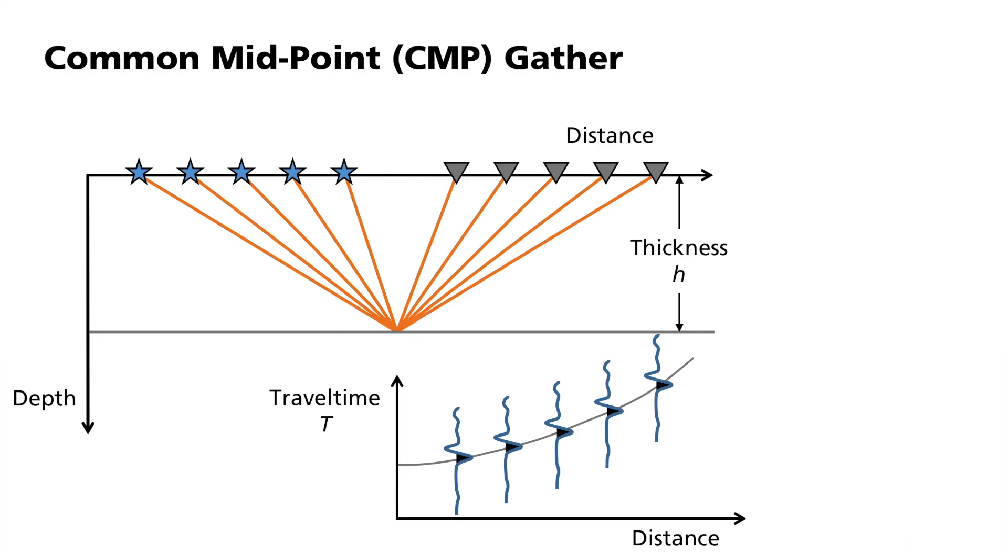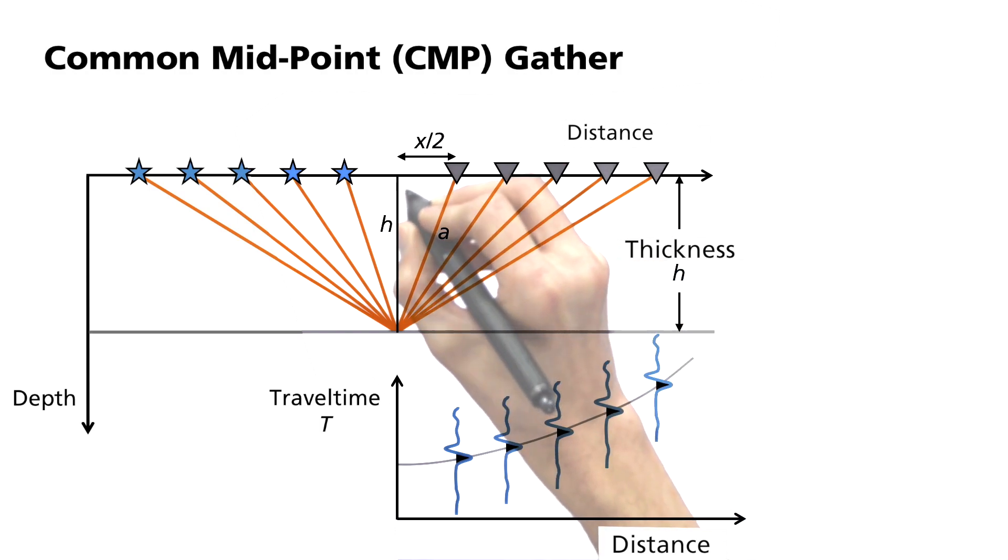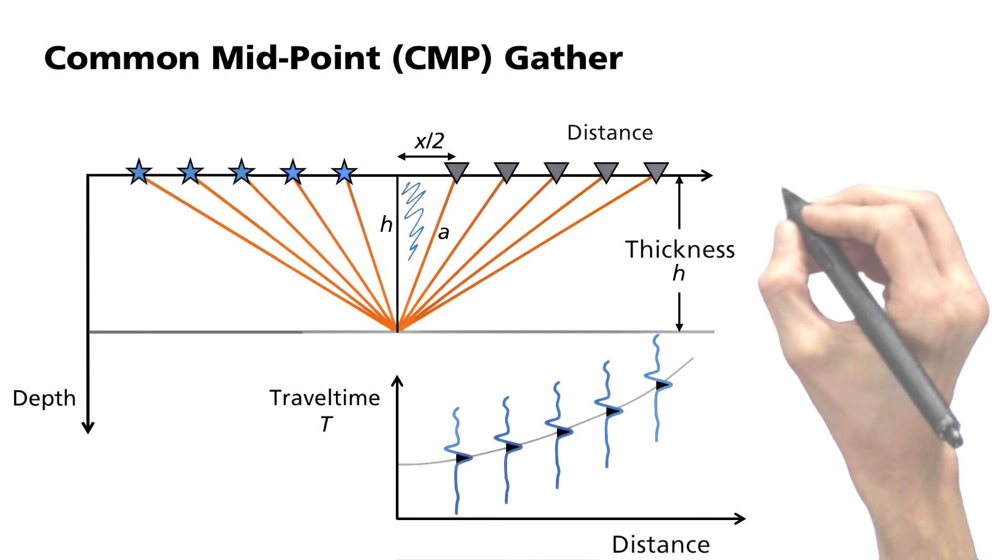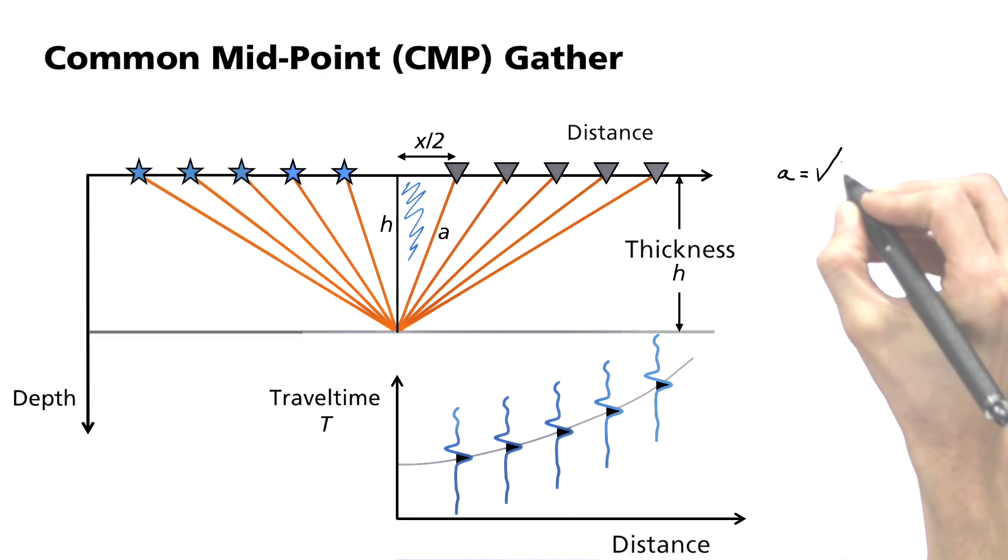If h is the thickness of the layer and x is the distance between the source and the receiver, the hypotenuse of the triangle is half of the travel distance. This then applies. a is equal to the square root of h squared plus x half squared.